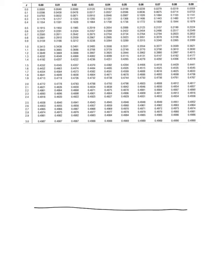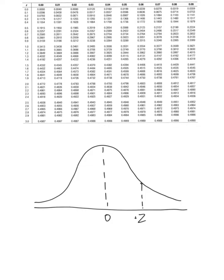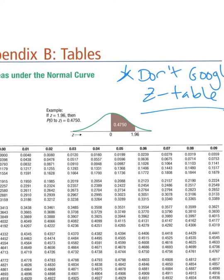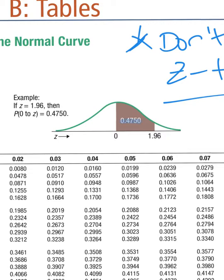The Z table we're using for this class gives us the area between the mean and some Z value. If I have a normal distribution with the mean in the center, the table shows the area between the mean and some positive Z value — that is, some number of standard deviations above or below the mean. Looking at the picture at the top of the table, you can see it's showing area between zero and some Z value.